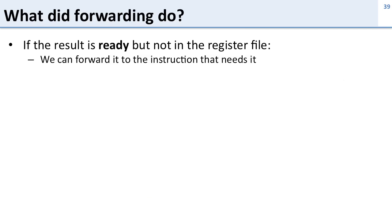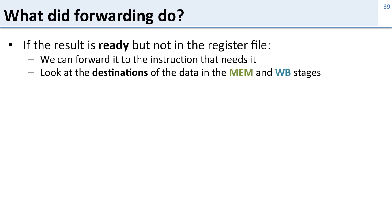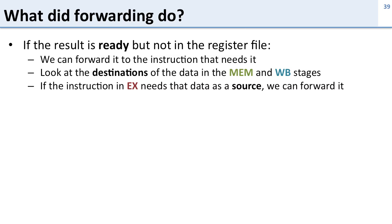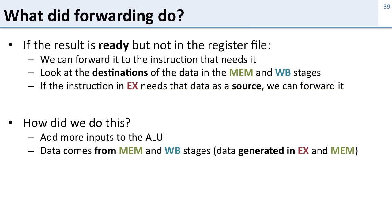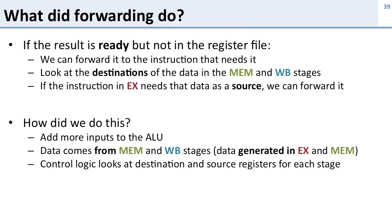So what did forwarding do for us? If the result is ready but not in the register file where we expect it, we can forward it to the instruction that needs it. We do this by looking at the destinations of data in the memory and writeback stages and checking if the instruction in the execute stage needs that data as a source. We added inputs to our ALU to select forwarded results and put in control logic that compares destination and source registers across stages to decide when to forward.